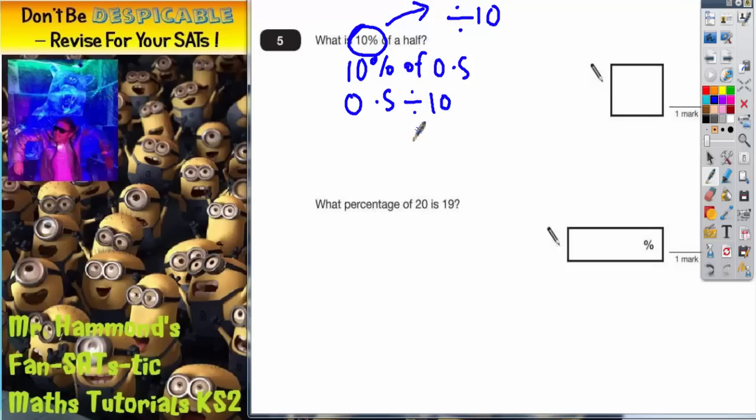Now if we're dividing by 10, the easiest way to think about this is to put our column headings in. So we've got units, tenths and hundredths. Let's write the number in, so there's 0.5. Now when we divide by 10, all the digits go one place to the right to make the number smaller. So the 5 will go from the tenths column to the hundredths column and the 0 will go from the units column to the tenths column.